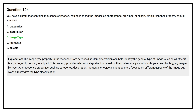The Image Type property in the response from services like Computer Vision can help identify the general type of image, such as whether it is a photograph, drawing, or clip art. This property provides relevant categorization based on the content analysis, which fits the need for tagging images by type. Other response properties such as Categories, Description, Metadata, or Objects are more focused on different aspects of the image and won't directly give the type classification.